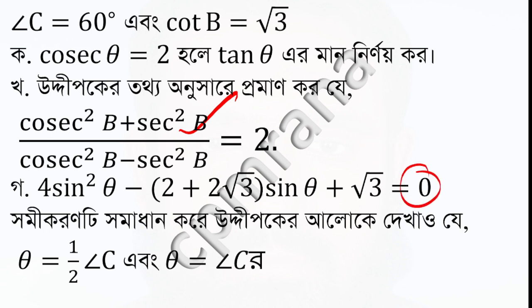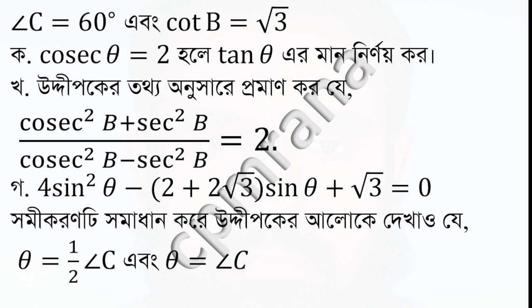Theta is equal to half c, meaning c is 60 degrees. So theta is equal to 30 degrees, and theta is equal to 60 degrees. This is the same result.